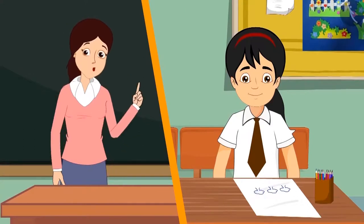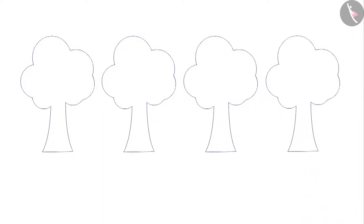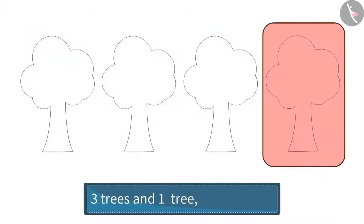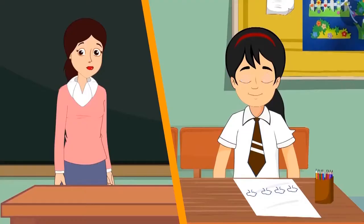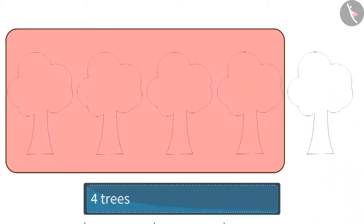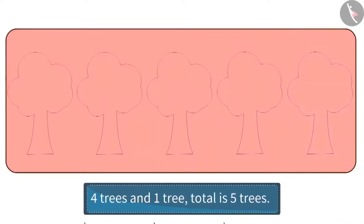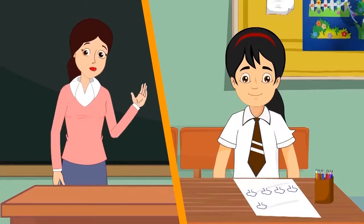If you draw another tree, how many trees will there be? Two trees and one more tree — so now in total there are three trees. Very good Pinky. If I draw one more tree along with these three trees, how many will there be? Three trees and one more tree — in total there are four trees. If I make one more tree along with these four trees, then four trees and one more tree makes five trees in total.